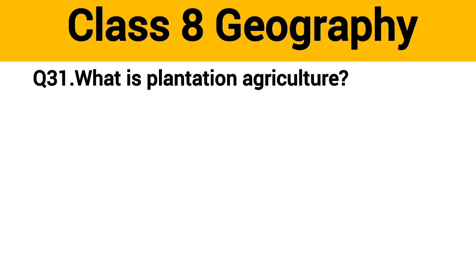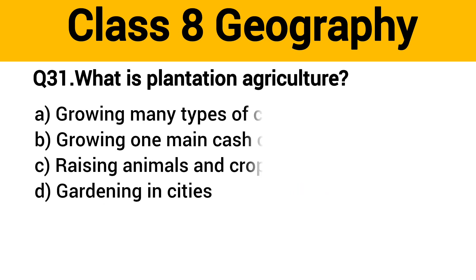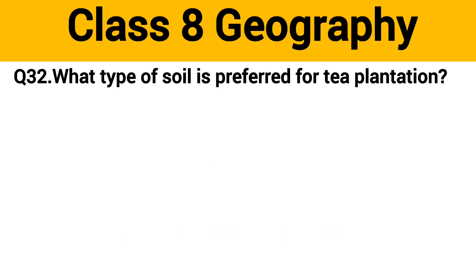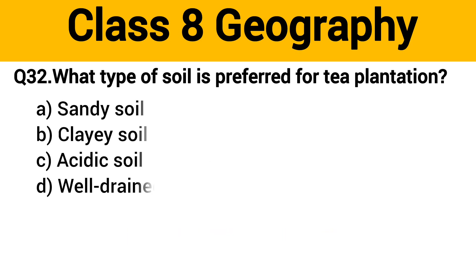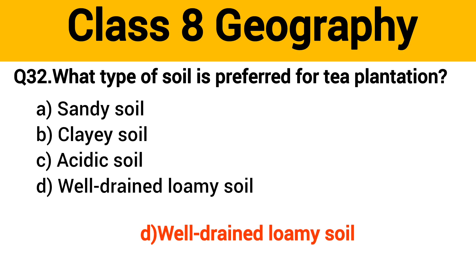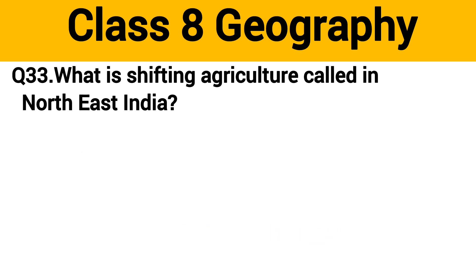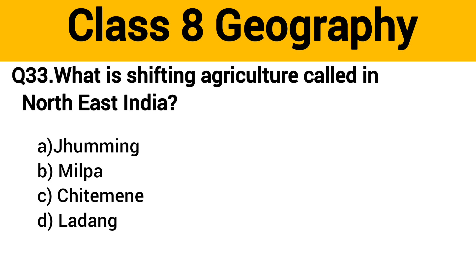Question number 31: What is plantation agriculture? The right answer is option B: growing one main cash crop. Question number 32: What type of soil is preferred for tea plantation? The right answer is option D: well-drained loamy soil.